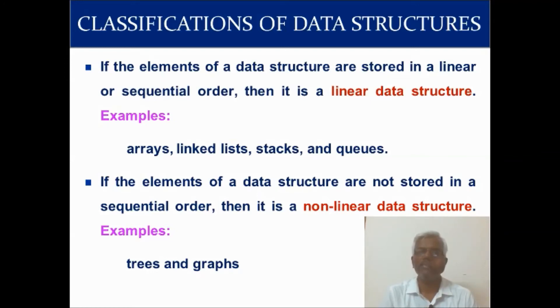Now, let me see what is linear data structure and non-linear data structure. If the elements of a data structure are stored in a linear or sequential order, then it is a linear data structure. Examples: arrays, linked list, stack, and queues. What it means? What is linear or sequential order? If anything which is ordered sequentially—everyone knows what is sequential, that is one after another—we call it sequential.